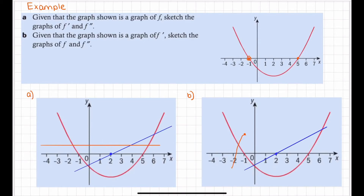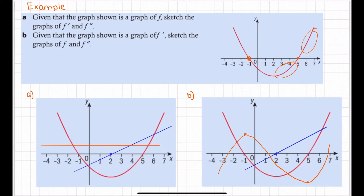Looking at x equals five: before five, the graph is in a negative space, meaning it had a negative gradient. After five, the gradient is positive because it's in the positive section of the graph. So it went from negative to positive — making it a minimum at x equals five. So our original function has a maximum at negative one and a minimum at five, giving us a curve that goes up to the maximum, down through to the minimum, and then back up.